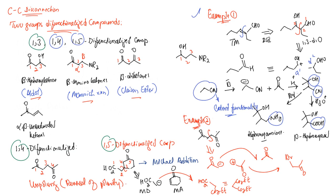For 1,4 difunctionalized organic compounds, we use reversal of polarity — umpolung — because we have two ketone fragments with opposite polarity, and this opposite polarity can be resolved through umpolung. For 1,5 difunctionalized compounds, we obtain them through Michael addition, involving a Michael acceptor and a Michael donor. Thank you for watching the video.